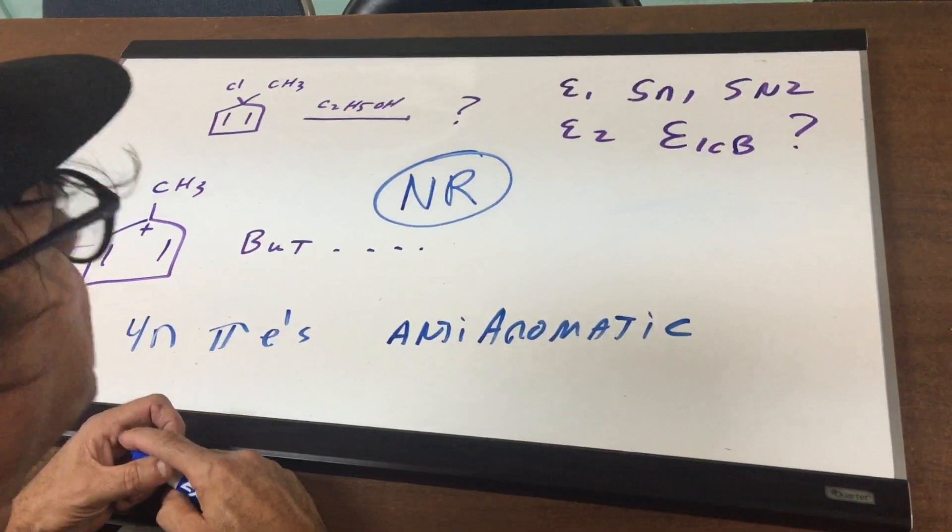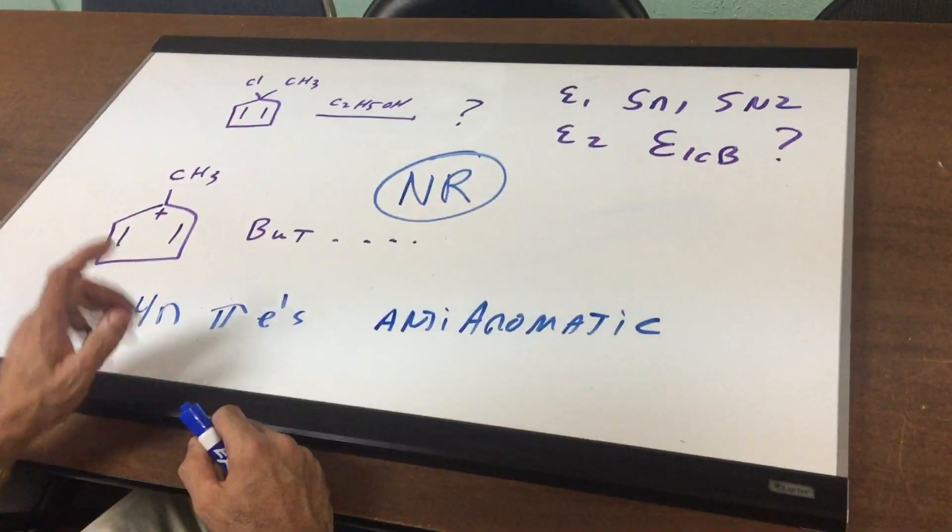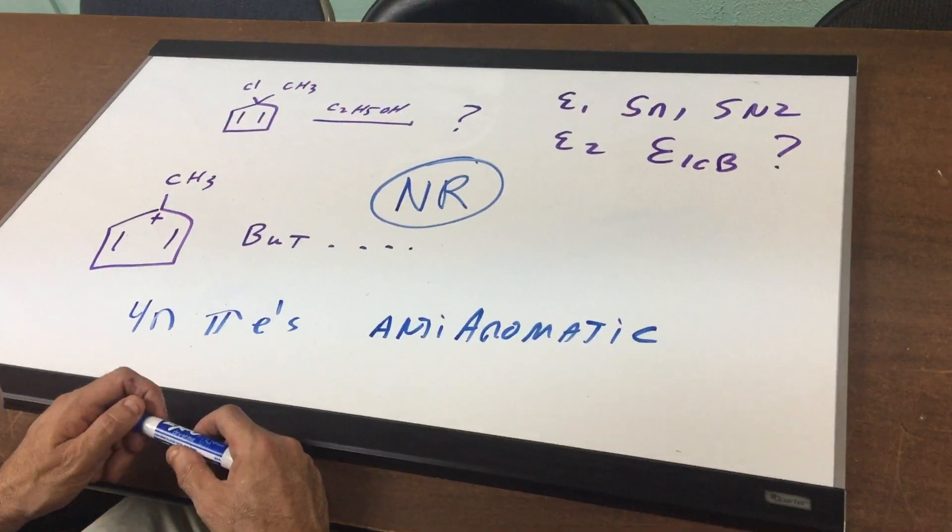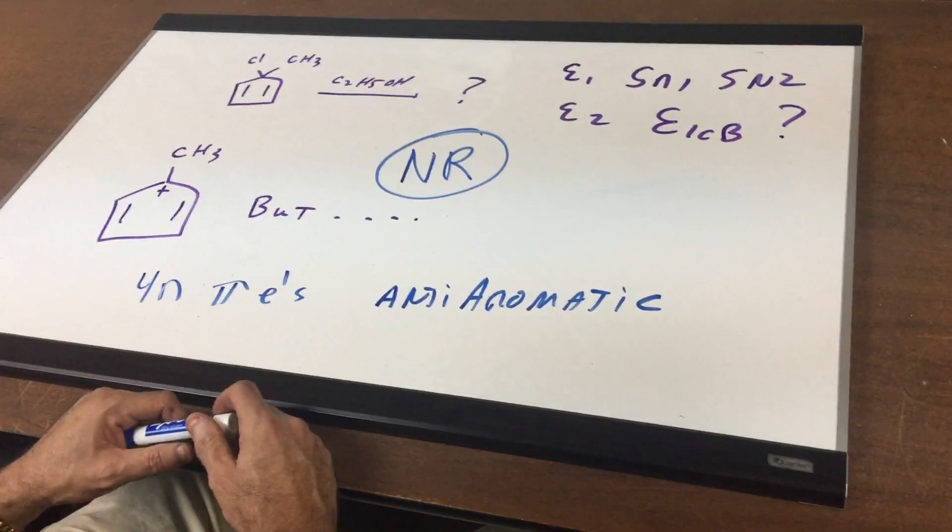I'm very glad to see a few of the students from my study group actually got this question right. So you are alert for the 4n. So if you ever see a 4n on a carbocation ion, run for the hills.